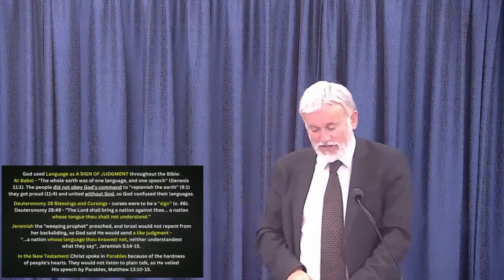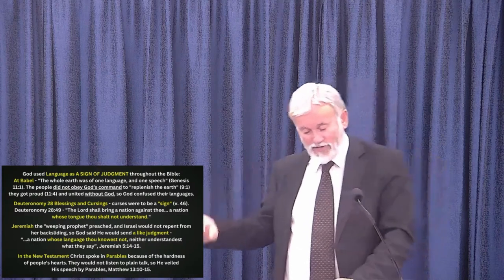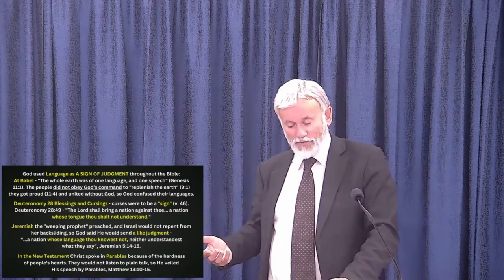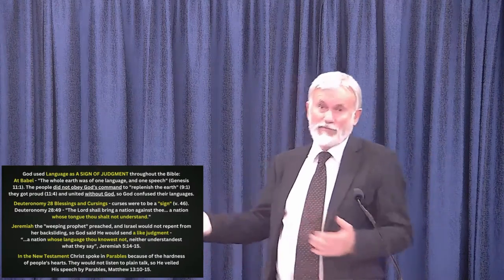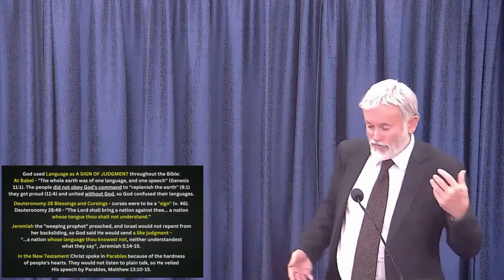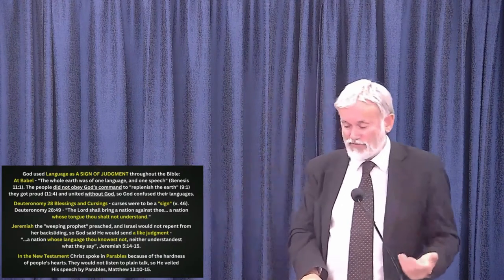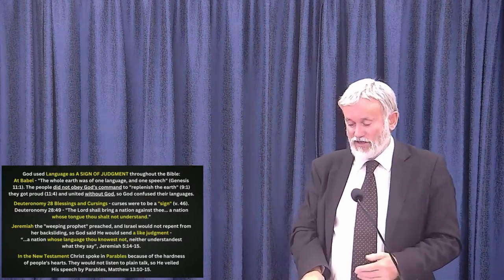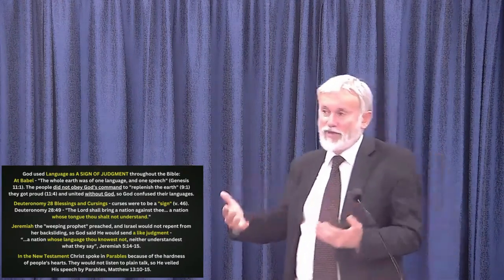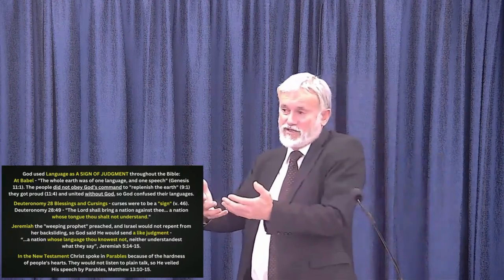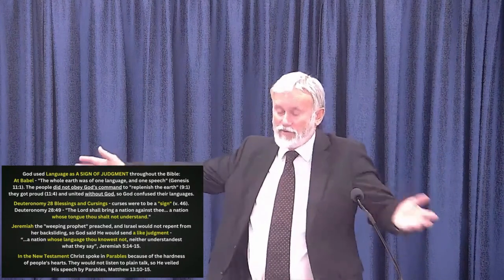At the Tower of Babel, the whole earth was of one language and one speech. The people didn't obey God, who had told them to go and fill the earth. God used the confusion of languages at Babel as a sign of judgment — and so similarly, the gift of tongues was connected to this same principle of God speaking judgment through language.